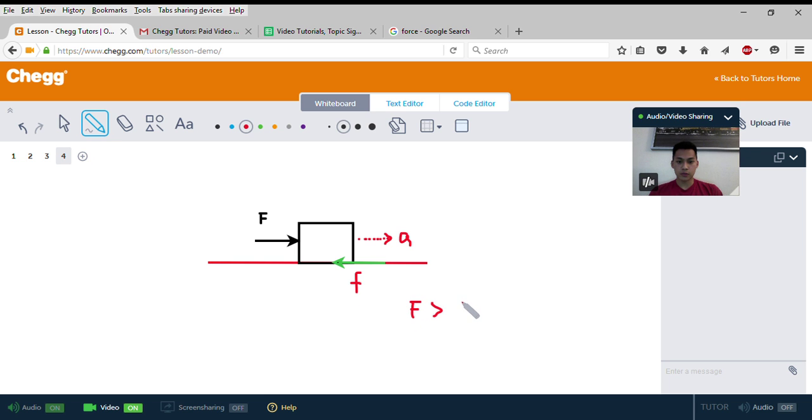However, if the force F is equal to the force of friction, the box will not accelerate at all because they oppose each other. Since they're opposing each other, the net force on the box is zero, so it's not going anywhere.